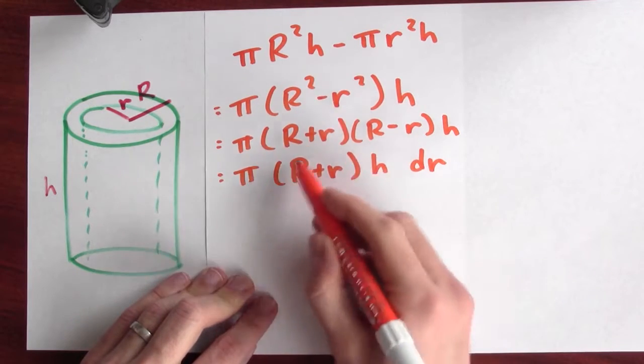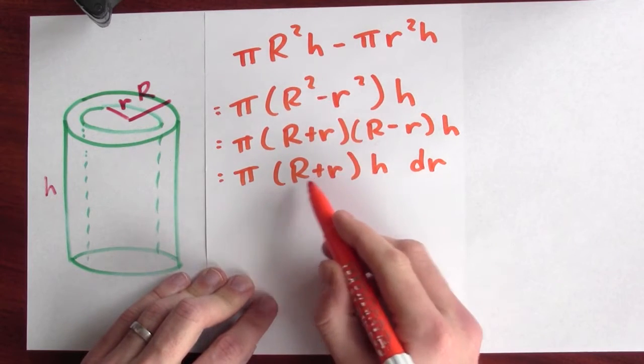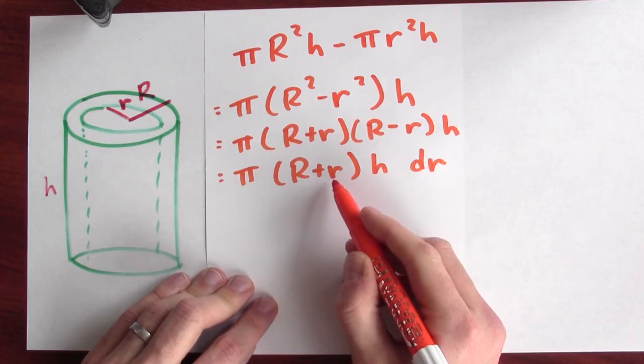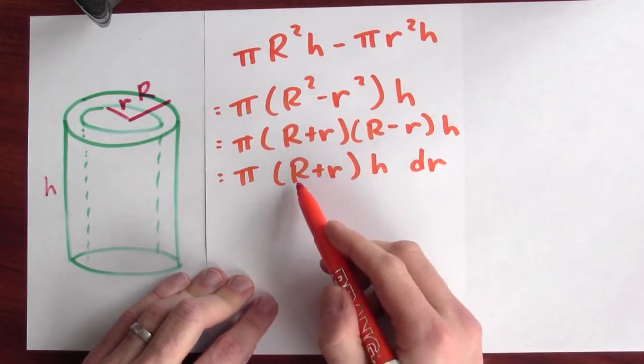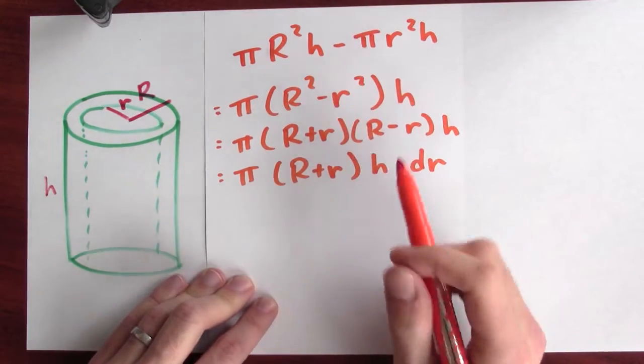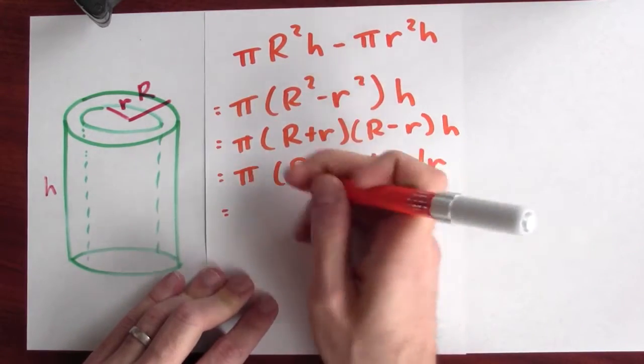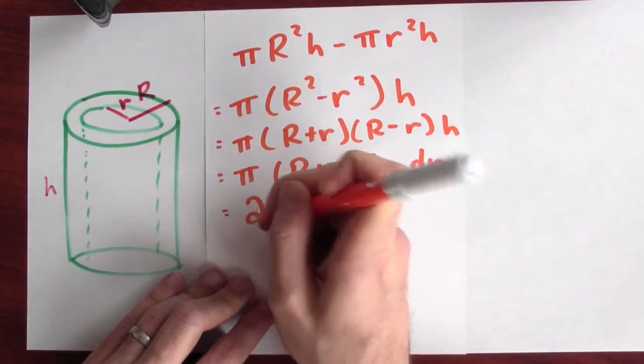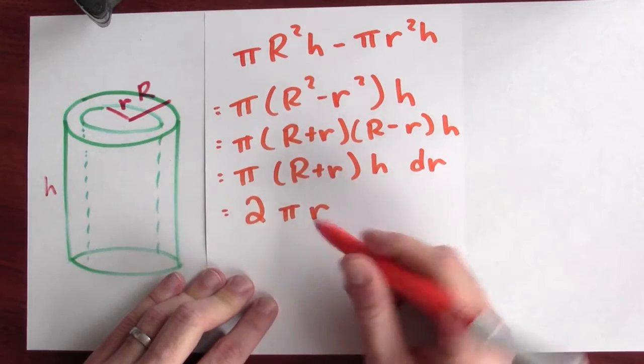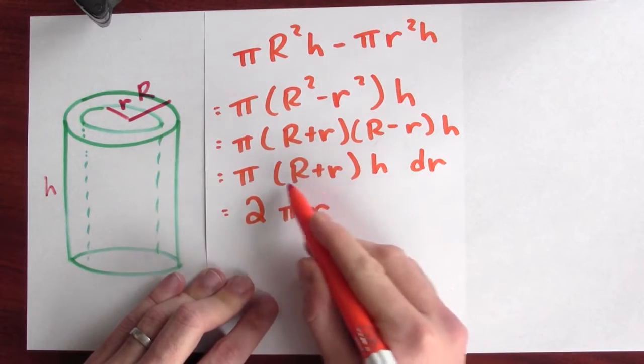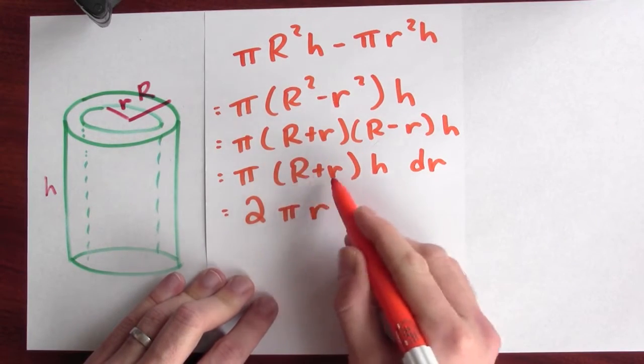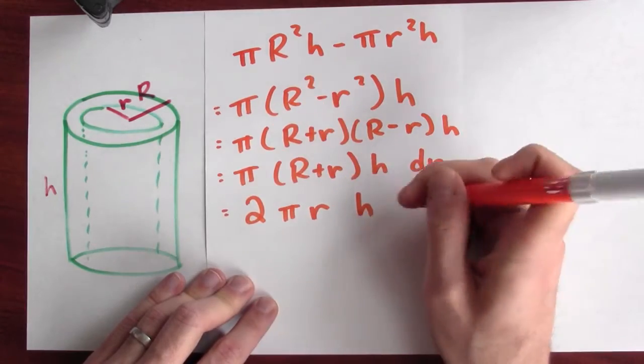Now what do I do with big R plus little r? Well, this is the sum of these two radii. I mean, if you think about big R and little r as being really close together, I might as well just write this as 2 little r. So I'll write 2π little r. That's 2 little r's if I'm imagining big R and little r to be close together. h dr.